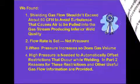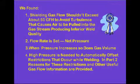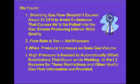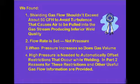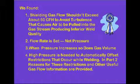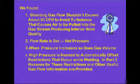In summary: shielding gas should not exceed 50 CFH to avoid air being pulled into the shielding gas stream. In MIG welding, flow rate is set, not pressure. When pressure increases, gas volume increases in proportion. High pressure was designed into MIG systems from the time it was invented to provide automatic flow compensation and assure pre-set flow is maintained while welding. In Part 2, we'll discuss the reasons for these restrictions and other shielding gas issues that will help solve welding problems.